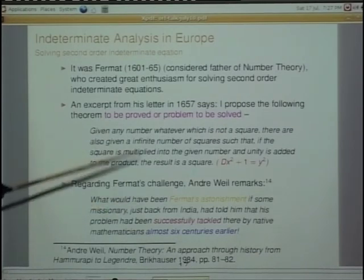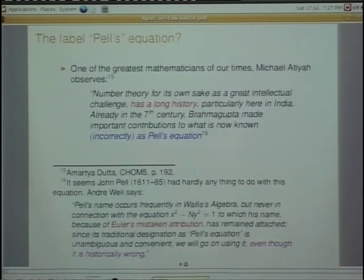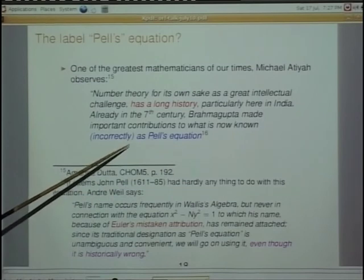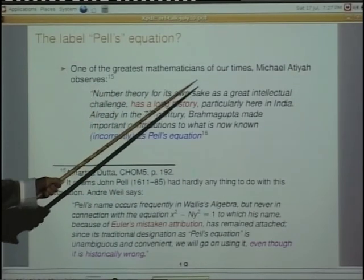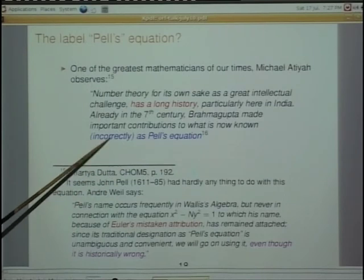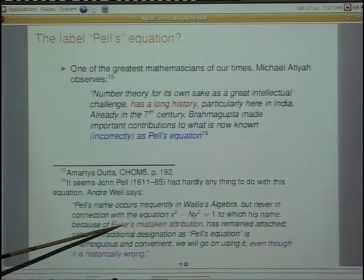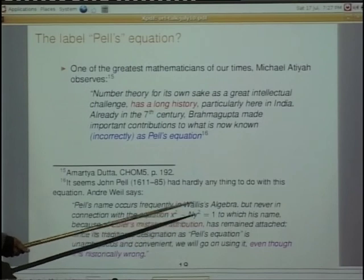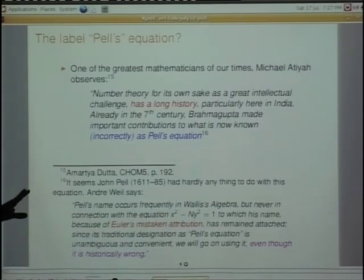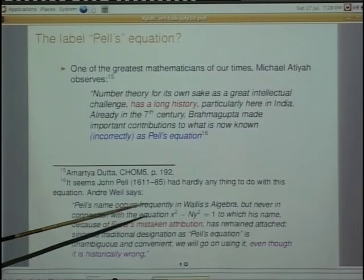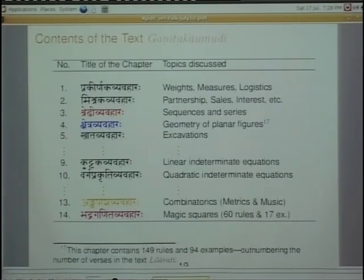Why is it usually called Pell's equation? Pell has nothing to do with it — that has been recognized by everyone. That mistake was committed by Euler, who referred to it as Pell's equation. If some established person says something wrong, everybody believes it — that is how it happened. One is not to blame anyone, but I am just telling you the truth.